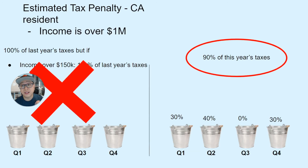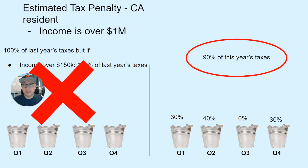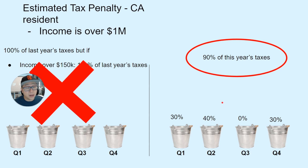To make things more complicated: if you live in California and your income is over $1 million, you can't use the last-year method — you're forced to use only the this-year method. Also, California has a different distribution rule: 30% in Q1, 40% in Q2, 0% in Q3, and 30% in Q4 — essentially 70% in the first six months. If you use the even 25%-per-quarter IRS method, California will charge you a penalty for underpayment.